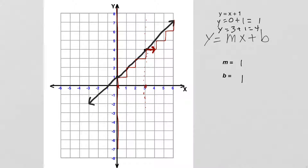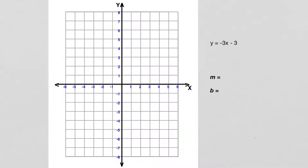It makes like a set of stairs — one step over, one step up. Not all lines have that slope. Some lines are steeper or less steep. You might do two steps over and one step up, and we'll look at another example in a moment with a slope like that.